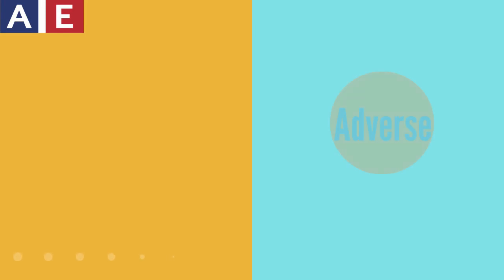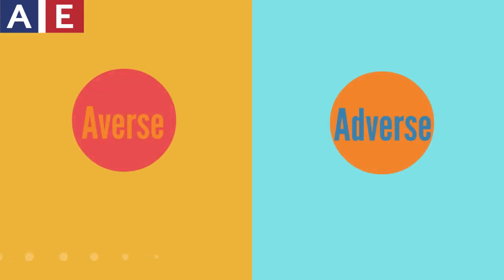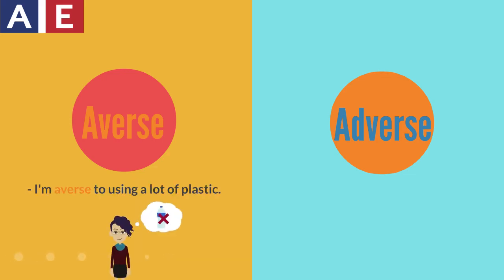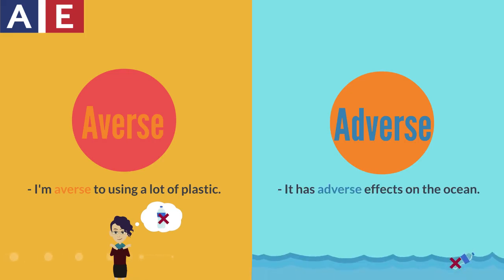Finally, we'll talk about adverse and averse. To be averse to something means to not like it. Adverse means bad or negative. For example: I'm averse to using a lot of plastic. It has adverse effects on the ocean.